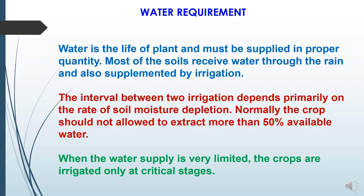First, an introduction about water requirement of crops. Water is the life of a plant and must be supplied in proper quantity. Most soils receive water through rainfall, supplemented by irrigation. Irrigation is defined as the artificial application of water to the soil for the purpose of crop production, in supplement to rainfall and groundwater contribution. The interval between two irrigations depends primarily on the rate of soil moisture depletion. Normally, the crop should not be allowed to extract more than 50% of available groundwater. The intervals are shorter in sandy soils compared to heavy soils, as heavy soils have high moisture retention capacity.